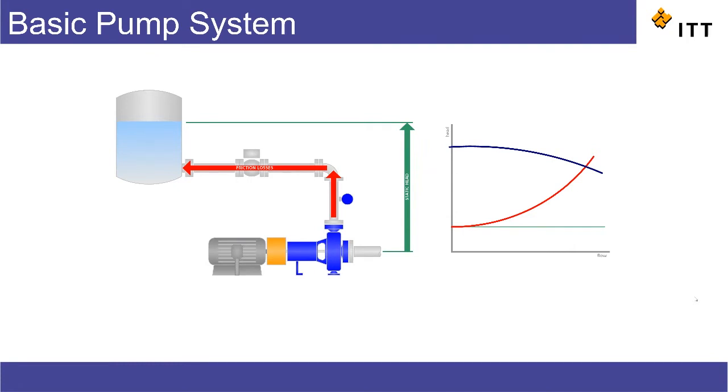Where the pump operates is the intersection of these two lines. This defines the amount of flow and the head generated in this particular application by this particular pump.